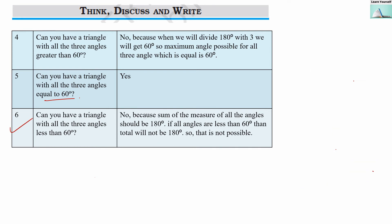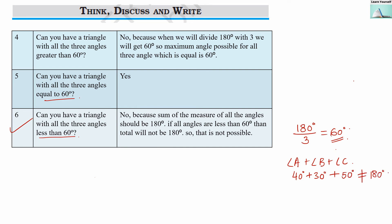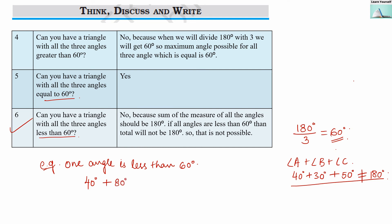The sixth question: can you have a triangle with all three angles less than 60 degrees? No, it is not possible. When we divide 180 degrees by 3, we get 60 degrees. If all angles were less than 60 degrees, the total would not reach 180 degrees, which violates the angle sum property. For example, if one angle is 40 degrees, another has to be 80 degrees, and the third could be 60 degrees. So if one angle is less than 60 degrees, another must be more than 60 degrees for the total to be 180 degrees. All three angles cannot be less than 60 degrees.